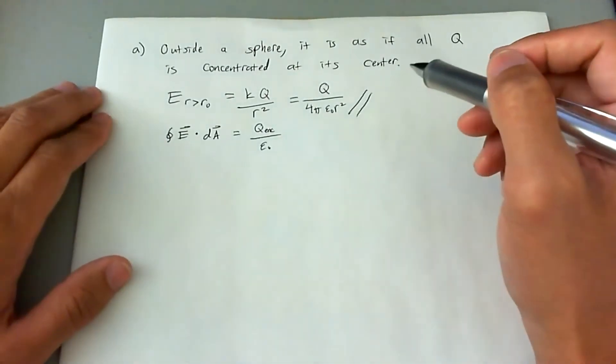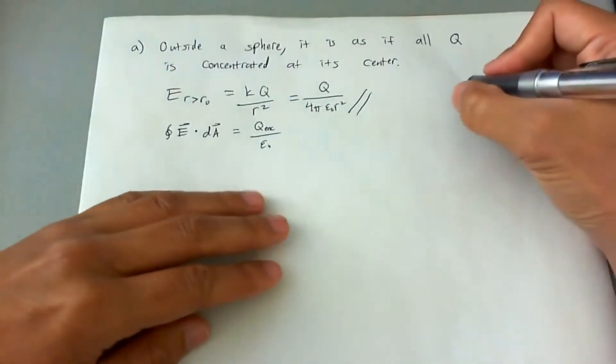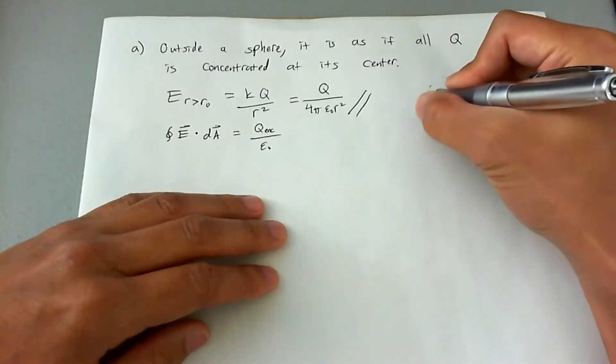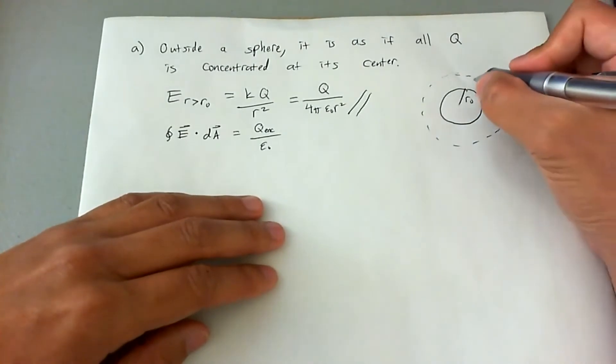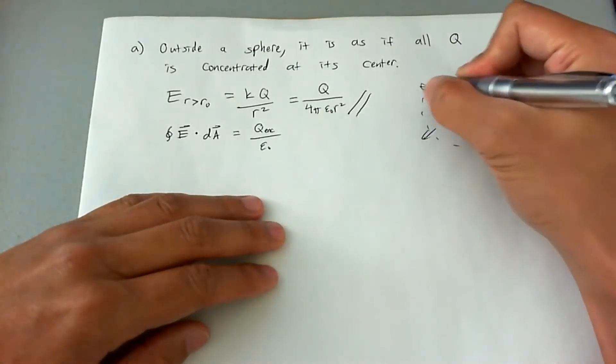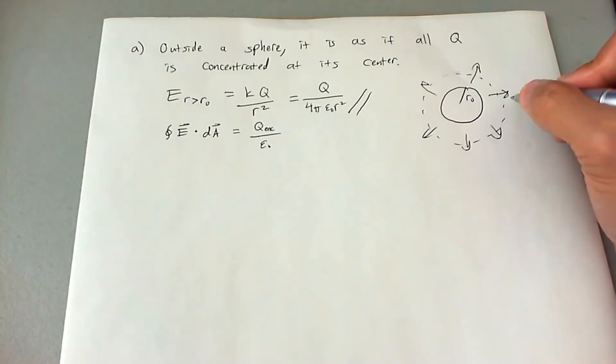Now for the sphere, it's uniformly charged. So a Gaussian surface outside of the sphere of radius r naught. If you put a Gaussian surface symmetrically outside the sphere, the E field is going to penetrate that Gaussian sphere uniformly and always perpendicular to the area or parallel to the area vector.